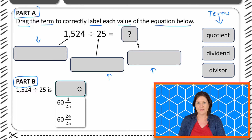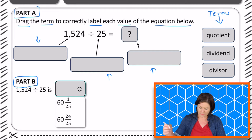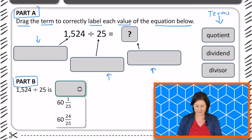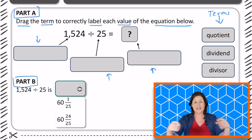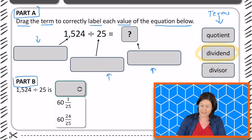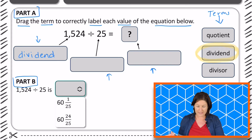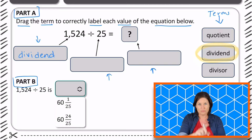Now I don't think the Fast Math assessment would necessarily have you dragging terms over, but this was just a way to show you how the dragging — the graphic response item display — would work on a test. So for this one, we've got 1,524 divided by 25 equals something. 1,524 is the total in the division problem. The total is known as the dividend. So what we would do on a computer is select 'dividend,' click it, and move it over to where we need it to go — right in here. I'm going to write it in. This is the dividend.